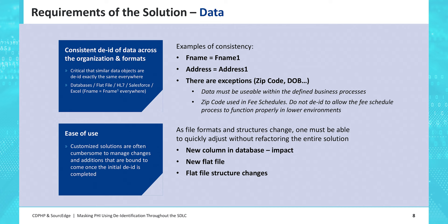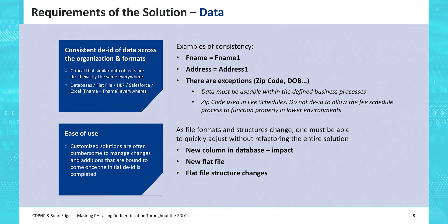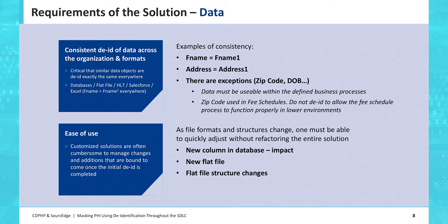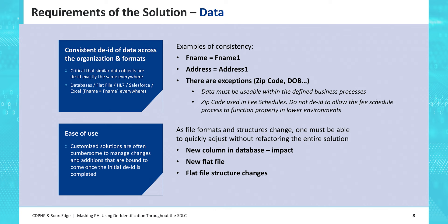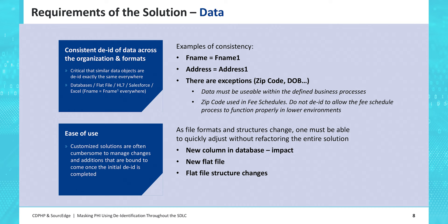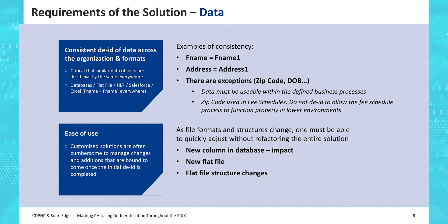We wanted to make sure we had consistency. A name, regardless of what it is, if the name is the same, it's going to be masked to the same value. From a volume perspective, you're loading in hundreds of thousands of names, and unless somebody actively goes through the process of taking one record and masking it, it's impossible to find a name in the database and figure out what it was in reality. We also wanted consistency across files, file formats — whether it be Salesforce, Facets, EDM, or whatever — and ease of use so the solution was simple to implement and simple to make changes.